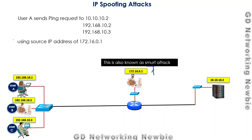So in IP spoofing attacks, instead of using genuine IP addresses, hackers use the IP address of some other machine on the network. With these two examples, the concept should be clear. Thank you very much for your time — hope to see you in another video on security.